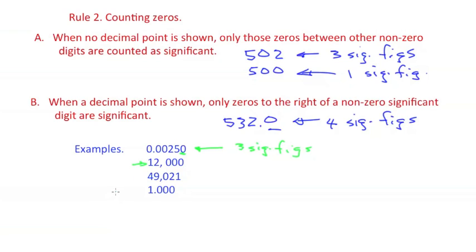Here, no decimal place is shown. So only the one and the two are significant. Two significant figures. Once again, in the third example, no decimal place shows. But this zero is between two non-zero significant figures. So I have five significant figures here.